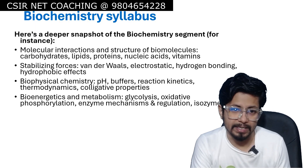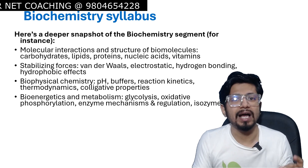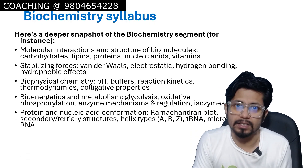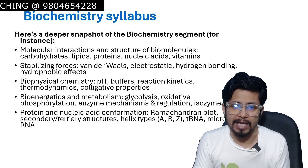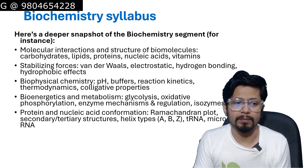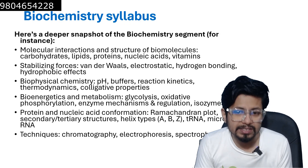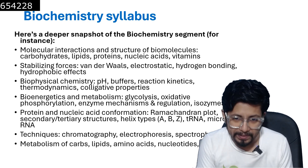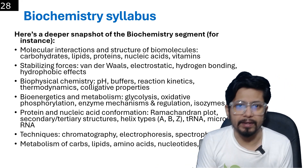Bioenergetics and metabolism covers glycolysis, oxidative phosphorylation, enzyme mechanisms and regulation, and isozymes. Protein and nucleic acid conformation includes the Ramachandran plot, secondary and tertiary structures, helix types like A, B, Z DNA types, tRNA, and microRNA. Techniques include chromatography, electrophoresis, and spectrophotometry. Metabolism of carbohydrates, lipids, amino acids, nucleotides, and vitamins are conclusive components of the biochemistry syllabus.